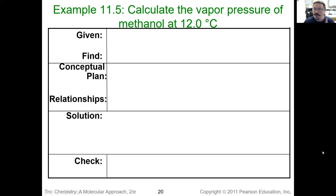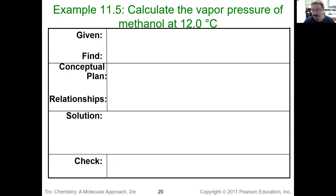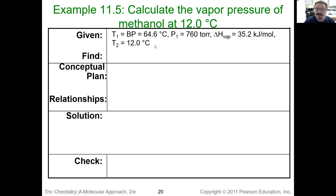Calculate the vapor pressure of methanol at 12 degrees C. Initially it looks like we only have one variable, but if we dig a little bit — they told us it's methanol, so we can look up the boiling point of methanol. Now we have our second temperature. We know that the boiling point is at standard pressure, so that's 760 torr — we have one of our pressures. We can go to our table for enthalpy of vaporization and find that for methanol as well. So it turns out we do have four of our variables, and the only one we don't have is the pressure P₂ at 12 degrees Celsius.